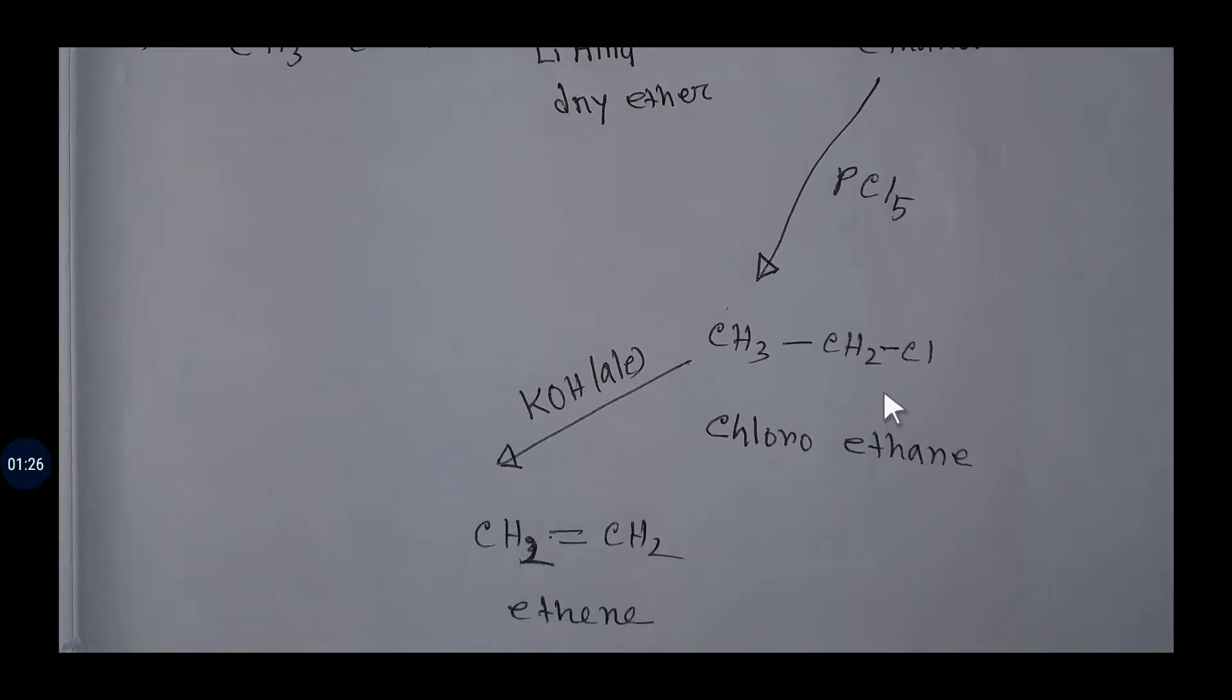Now if you add alcoholic potassium hydroxide, like potassium hydroxide in ethanol, then this chlorine will take hydrogen from the adjacent carbon and you will get a double bond between these two carbons. Thus you are getting ethene, which is your targeted compound.